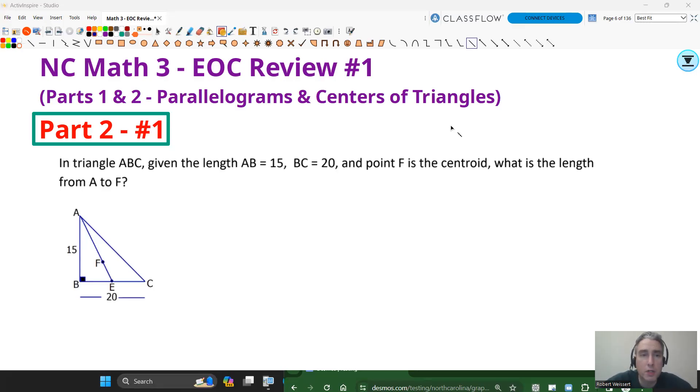Okay, this is part two, question number one. In triangle ABC, given the length AB is 15, BC is 20, and point F is the centroid, what is the length from A to F? So since they tell you point F is the centroid, then we can go back to those properties I just talked about. And we can say, if I want to know A to F, and point F is the centroid, I know that AE is the median. That's a median here. So therefore, I know that that segment here from B to C is going to be split in half. And each of those segments are going to be 10 units long, since the whole thing from B to C is 20. The next thing I know is AF is going to equal two-thirds of AE. So since I have a right triangle in this case, I can once again use Pythagorean theorem.